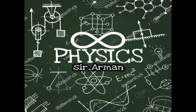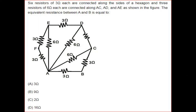Hello everyone, welcome to Infinity Physics. In this lecture we will solve a question related to Chapter 3, Class 12. The question: given 6 resistors of 3 ohm each are connected along the sides of a hexagon, and 3 resistors of 6 ohm each are connected along AC, AD, and AE as shown in the figure. The equivalent resistance between point A and B is to be found.